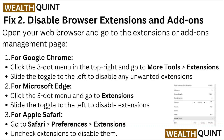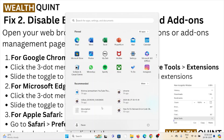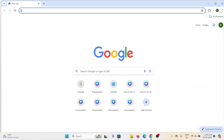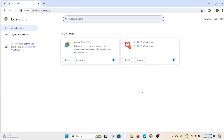Fix number two: disable browser extensions and add-ons. Open your web browser and go to the extensions and add-ons management. For Google Chrome, click on the three-dot menu on the top right, go to More Tools, then Extensions. Slide the toggle to the left to disable any unwanted extension. Here you can disable whichever extensions you don't require.